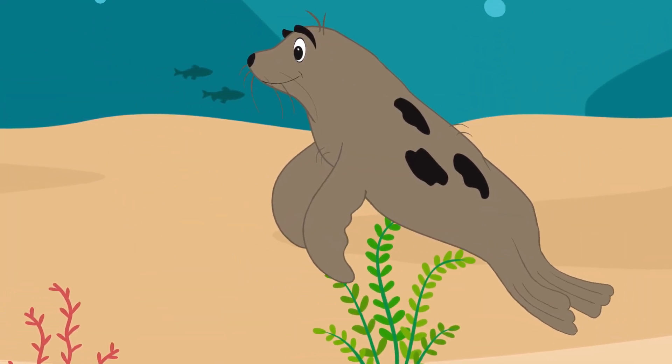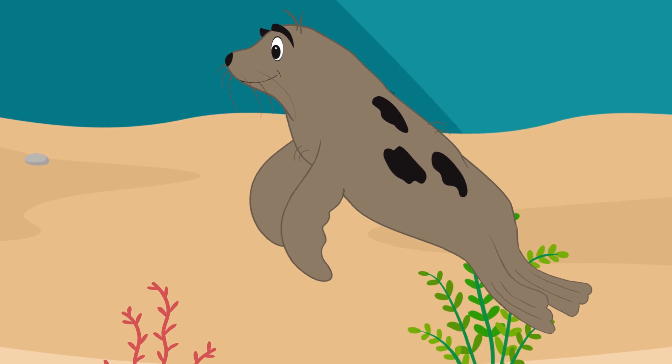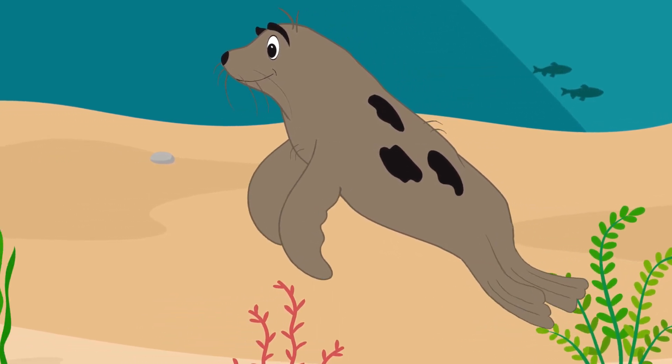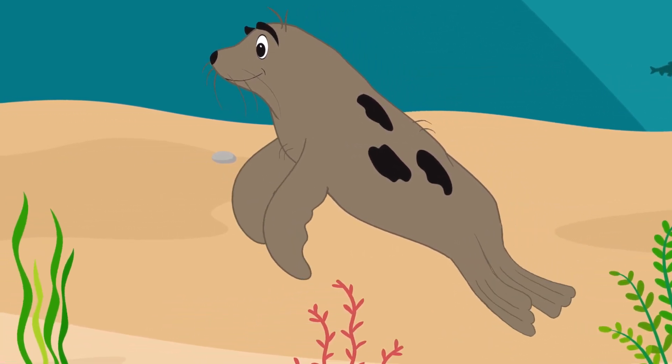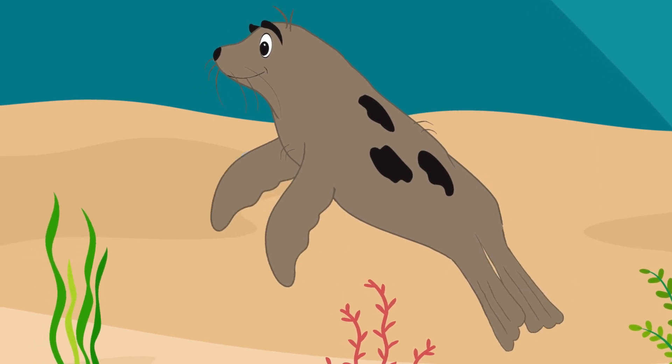But even though Cecil meant well, it wasn't long before he forgot about his promise to Inky. He was so excited about the butterflies that when he saw his friend Marina the dolphin later that day, he just couldn't keep the secret!